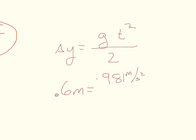So delta y is equal to g times time squared over 2 and I know that my delta y is 0.6 meters and my g is negative 9.81 meters per second squared times time squared all of this over 2.